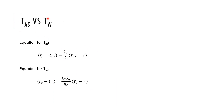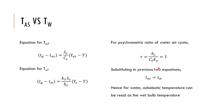We can find T_as using the wet bulb temperature scale. The equation for T_as has the same format as the wet bulb temperature equation — the only difference is the intercept. For the adiabatic saturation temperature: (Y_as - Y) = (C_s / λ)(T_g - T_as). For the wet bulb temperature equation, we also have a similar relationship involving the psychrometric ratio h_c / (k_y C_s).